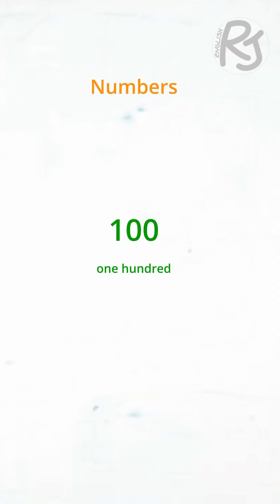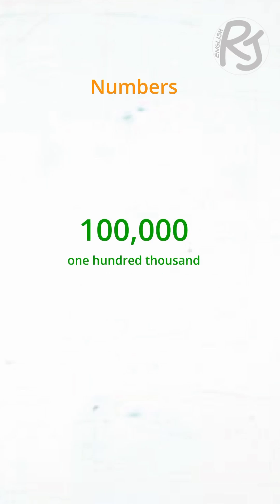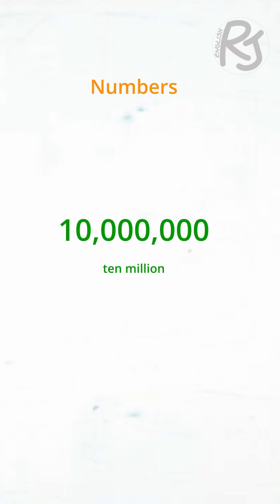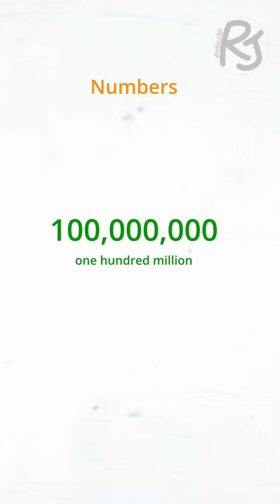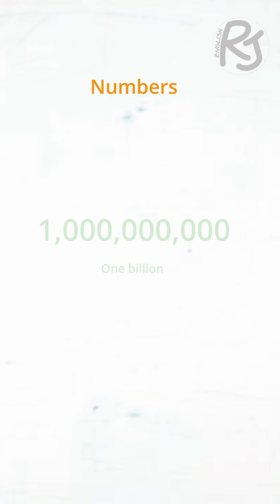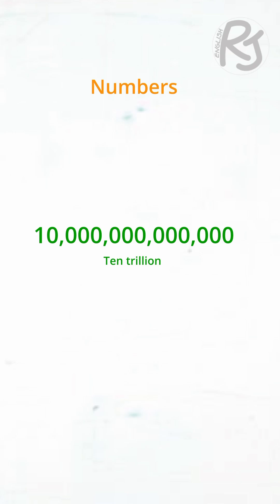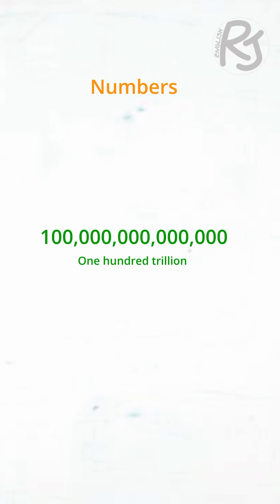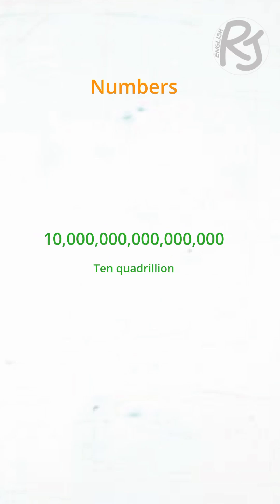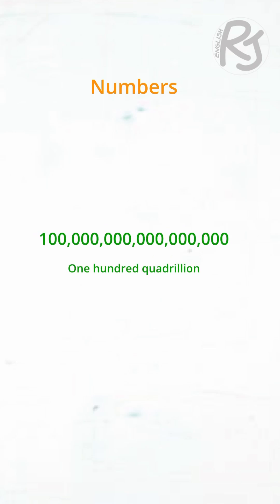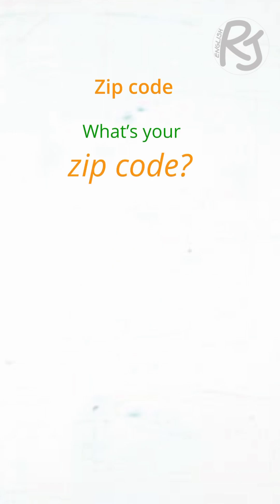Numbers: 1, 10, 100, 1,000, 10,000, 100,000, 1 million, 10 million, 100 million, 1 billion, 10 billion, 100 billion, 1 trillion, 10 trillion, 100 trillion, 1 quadrillion, 10 quadrillion, 100 quadrillion.